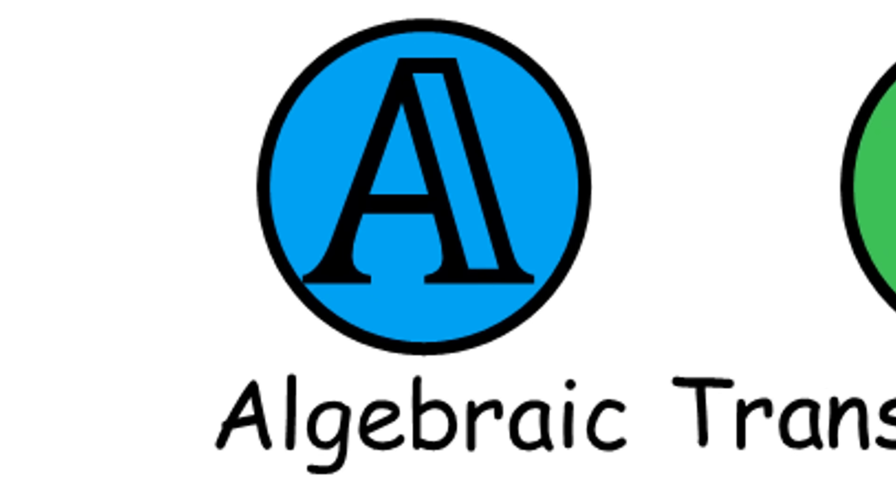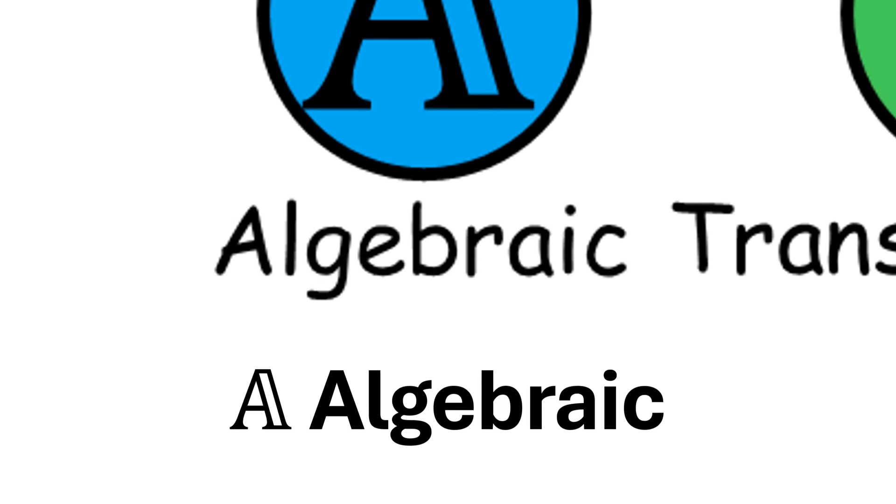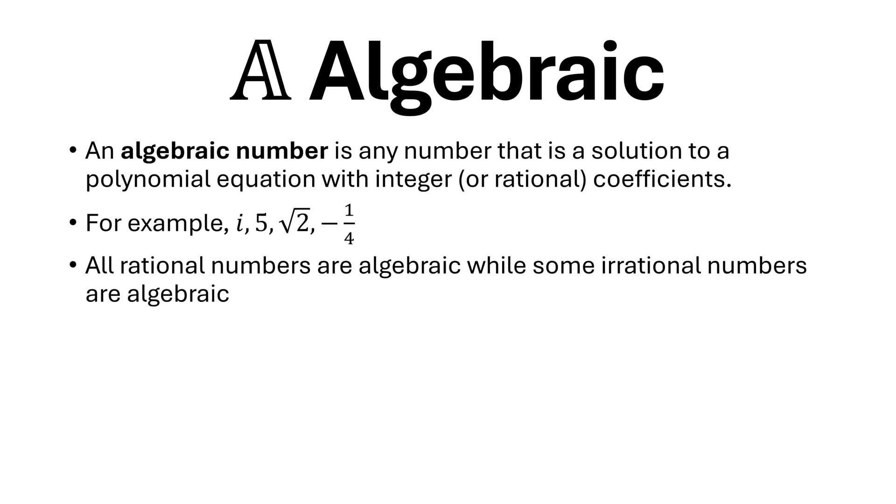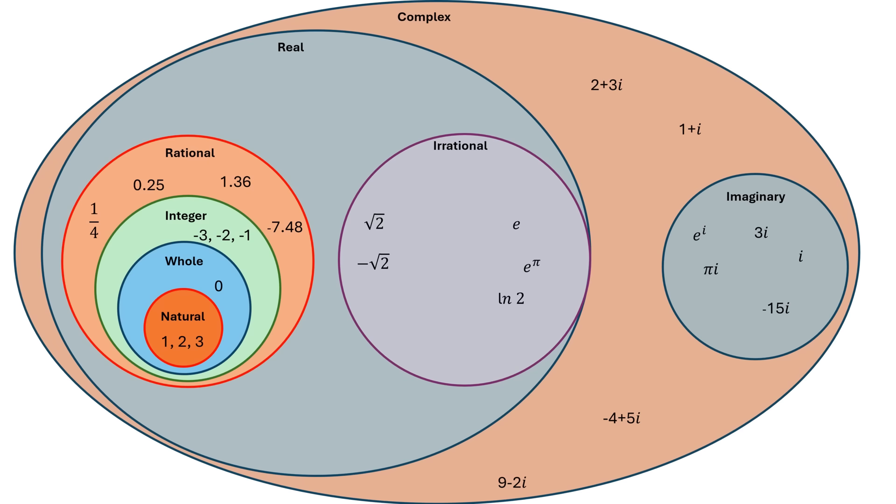An algebraic number is any number that is a solution to a polynomial equation with integer or rational coefficients. For example, i, 5, square root 2, -1/4. All rational numbers are algebraic, while some irrational numbers are algebraic. The set of algebraic numbers is countable.